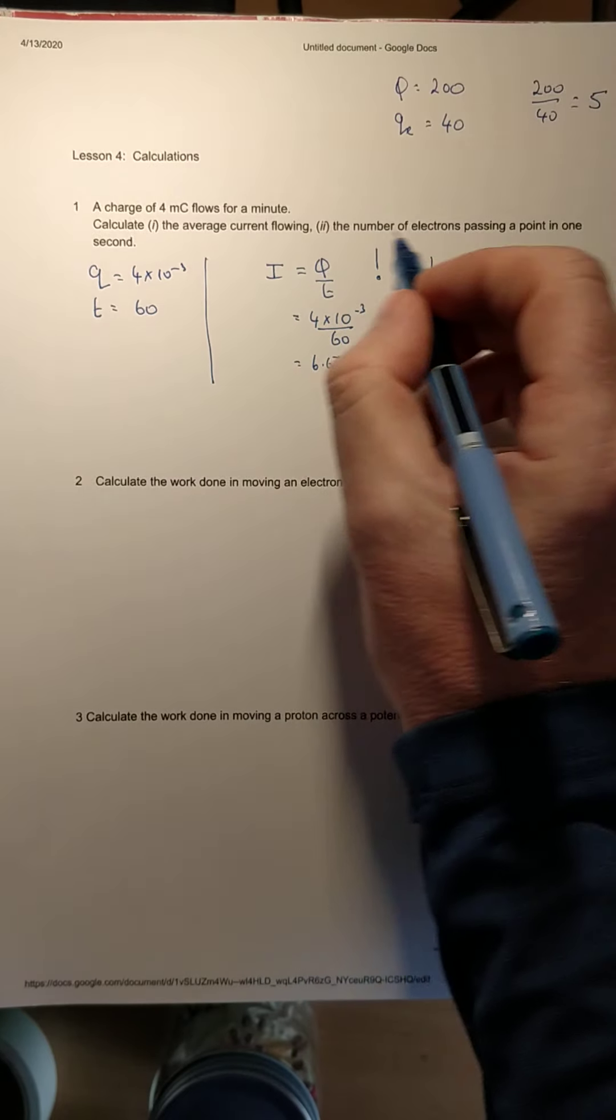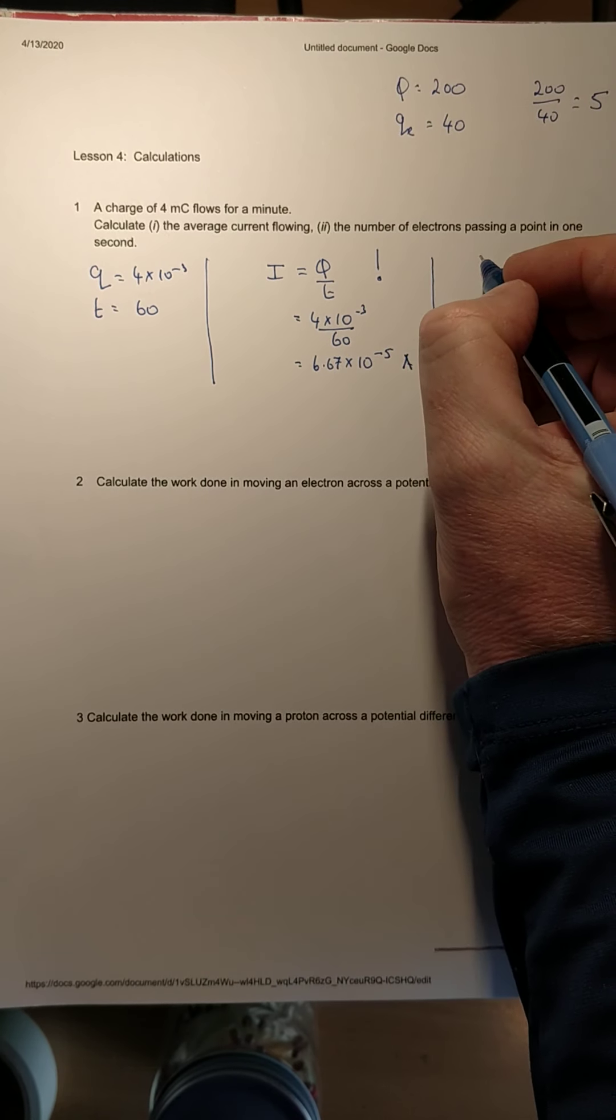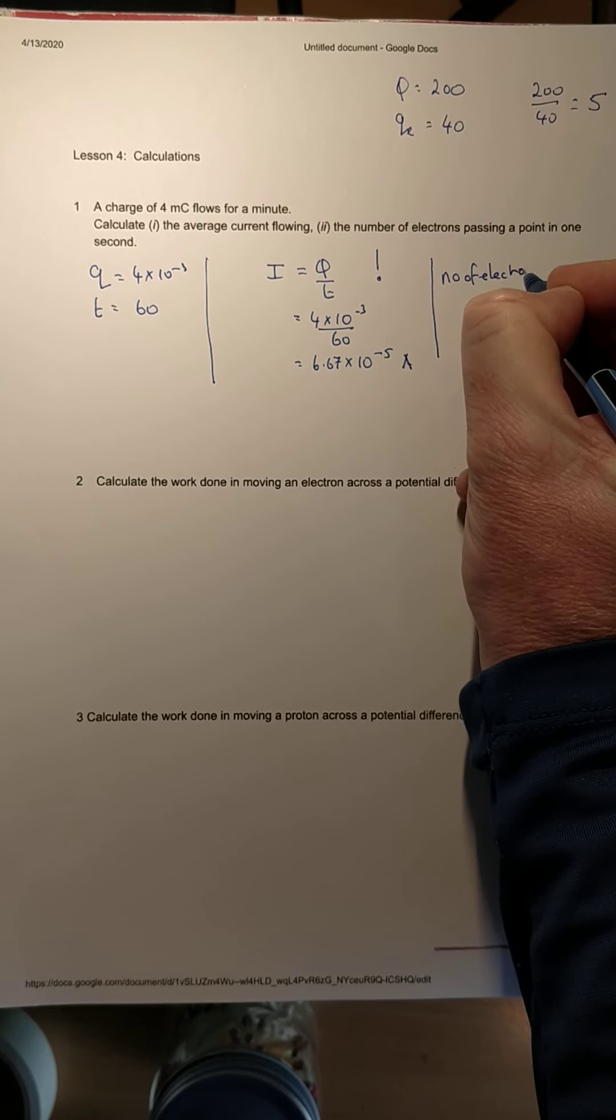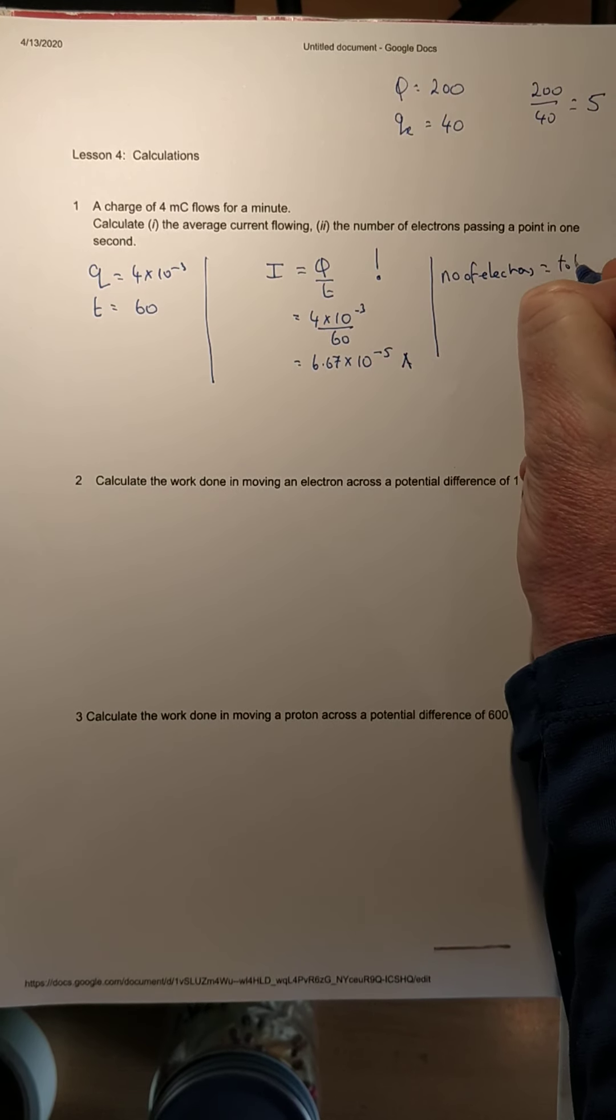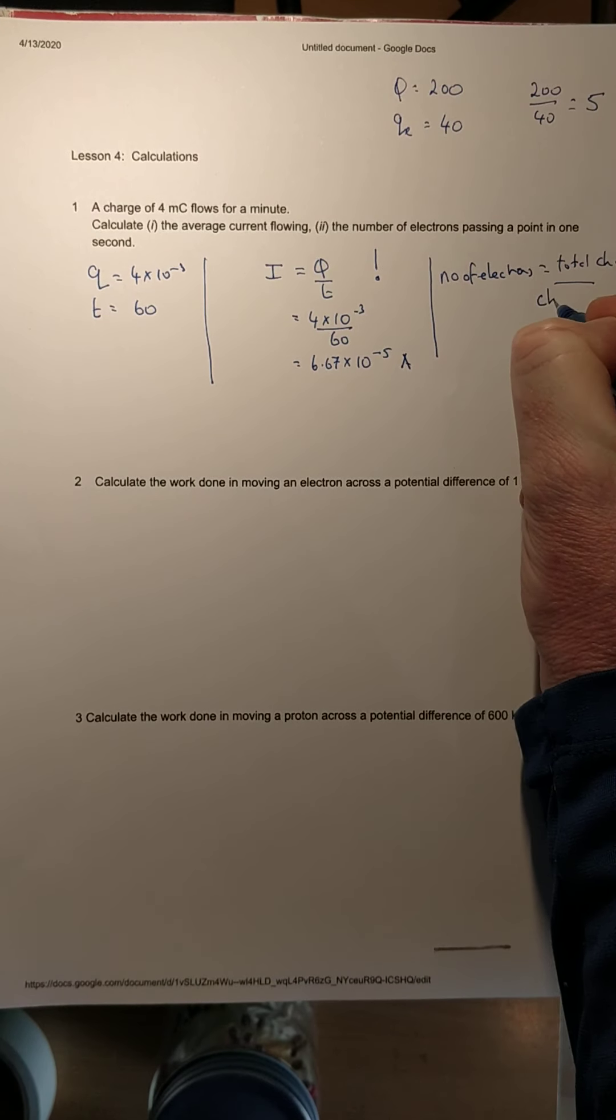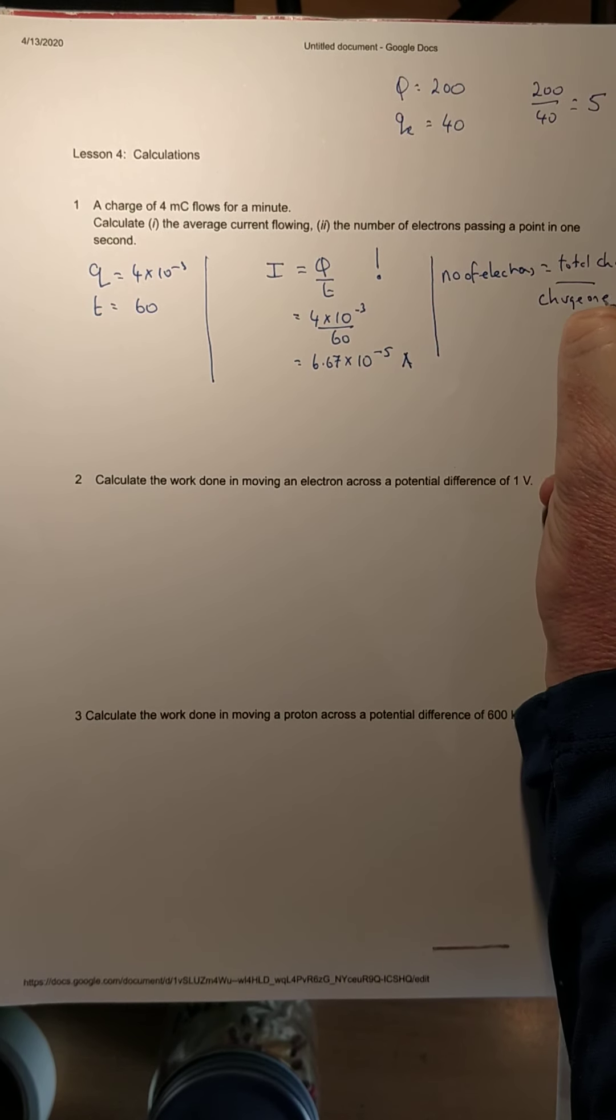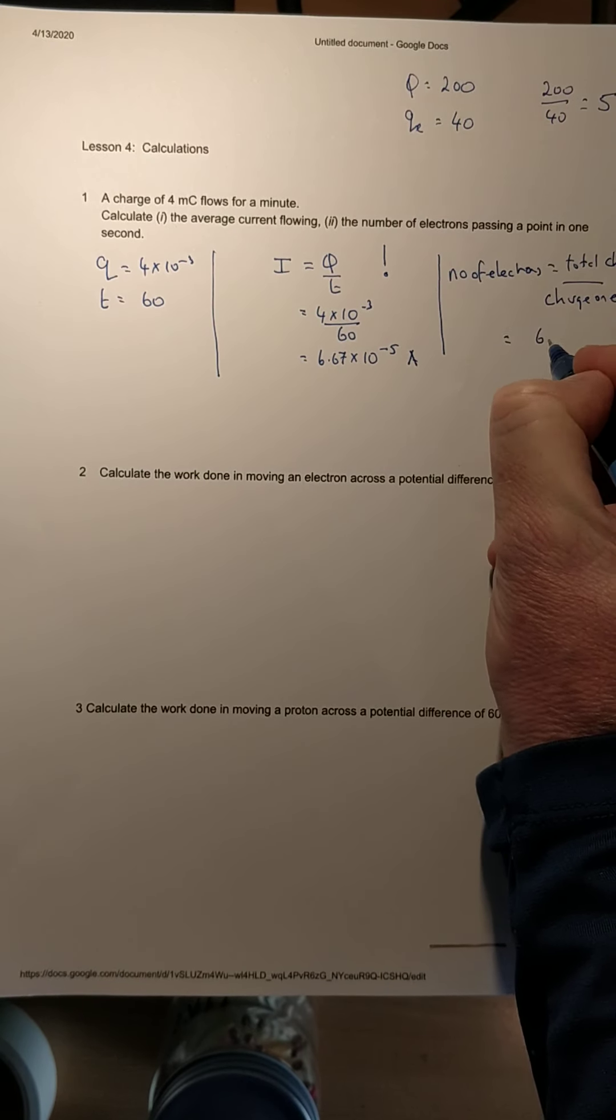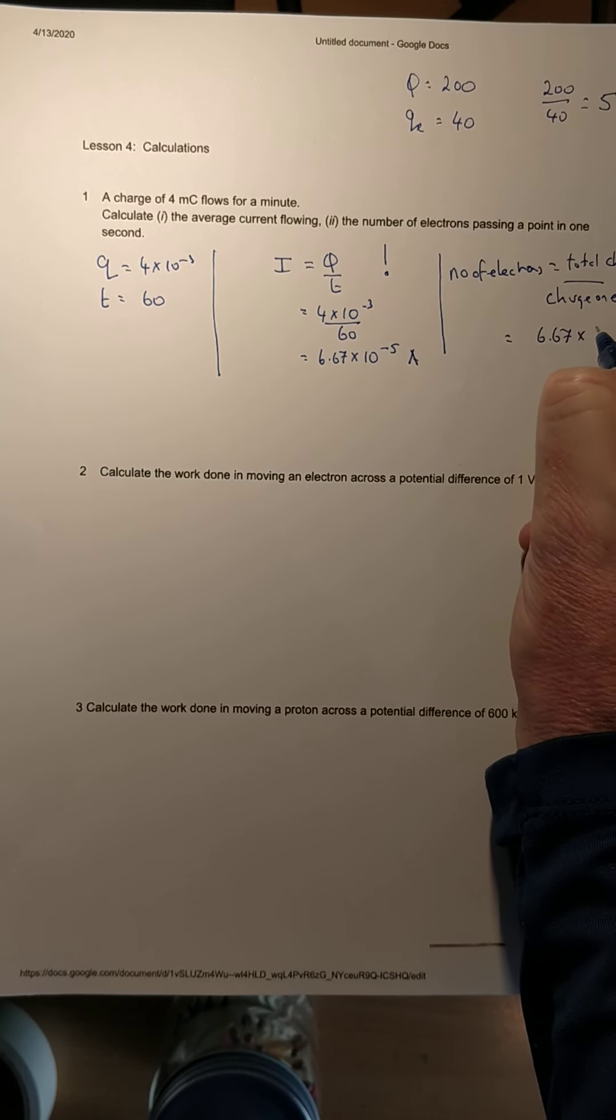So the number of electrons passing a point in one second: the number of electrons will be the total charge divided by the charge on an electron. So in this case, 6.67 × 10⁻⁵ divided by 1.6 × 10⁻¹⁹.